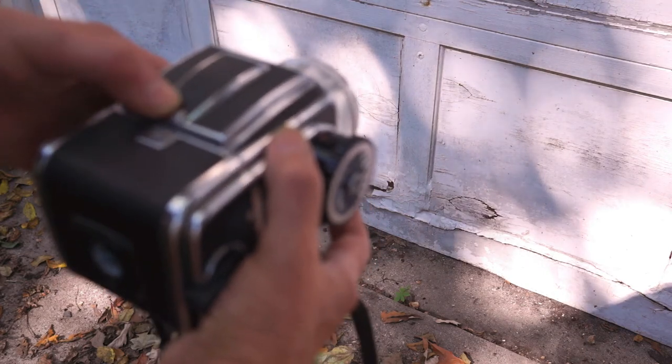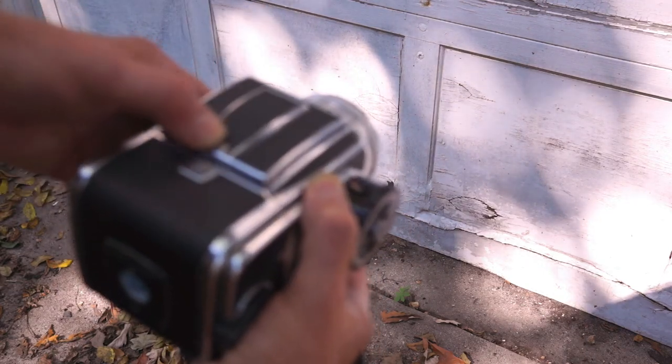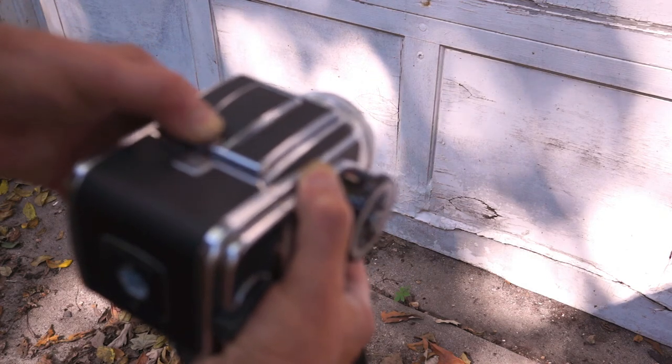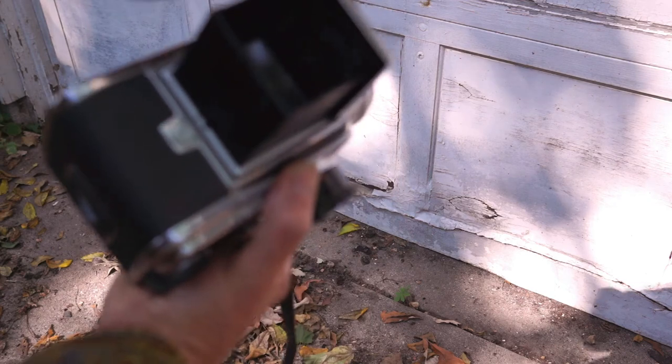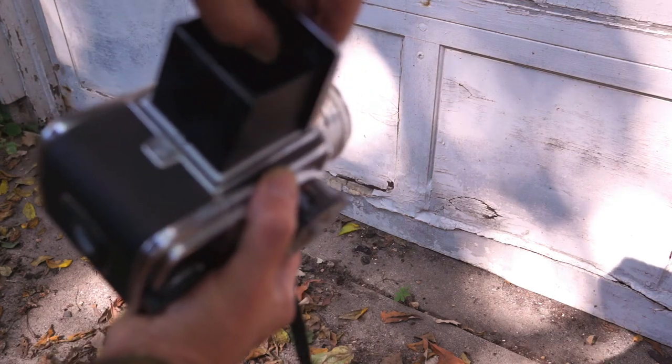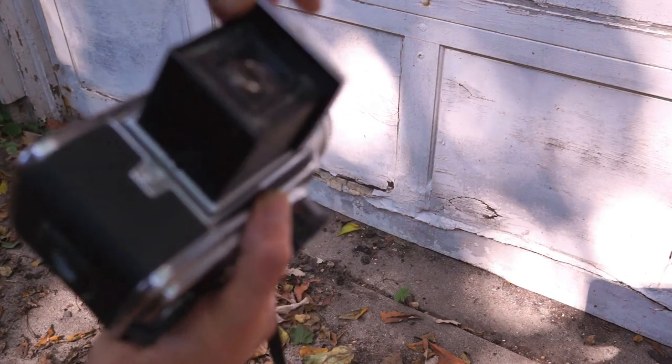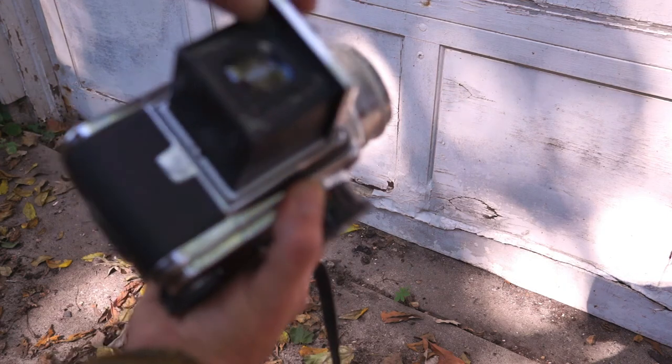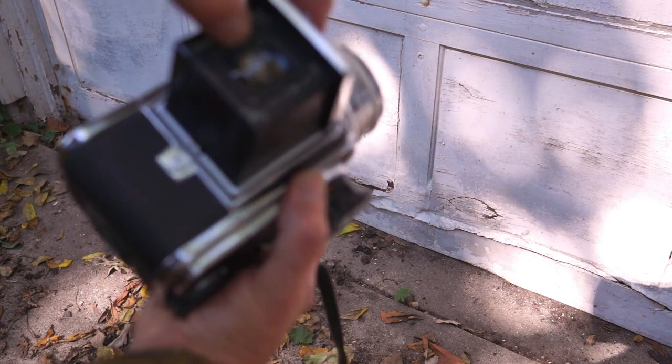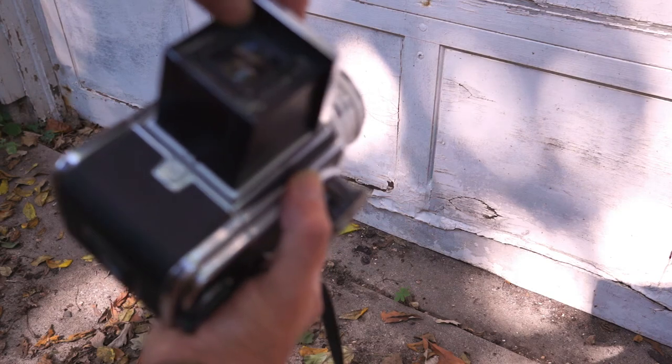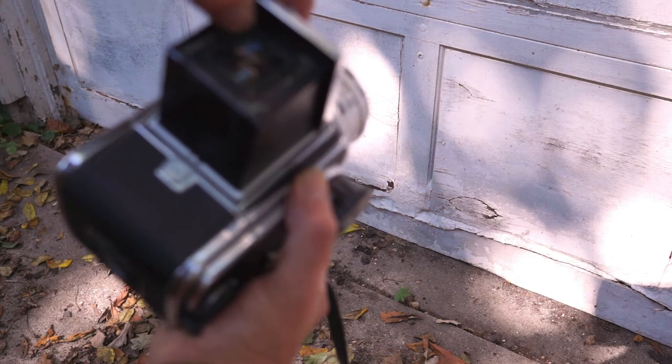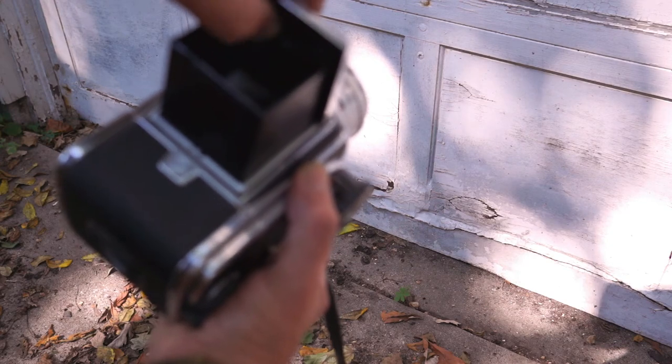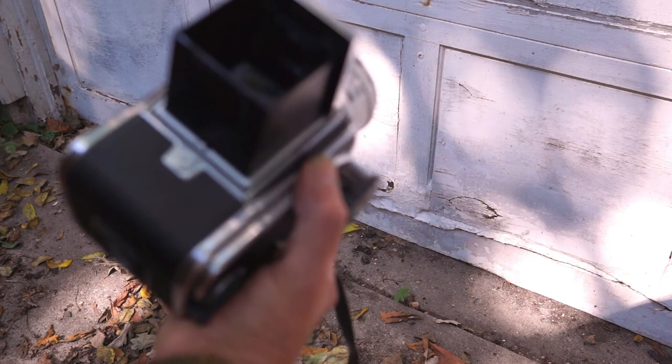To open up the focusing hood, there's a button here that we push to the right, and then the whole thing should pop out. There's a magnifier in the viewfinder that you release by pushing this button to the side, and that can help aid in focusing, but it doesn't always show you the whole frame. You may want to focus with the magnifier up and then push it back into place when you're actually composing.